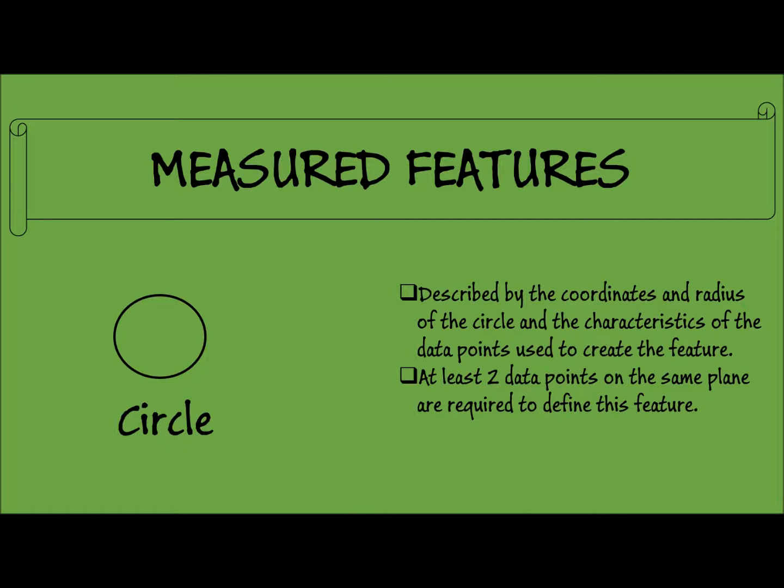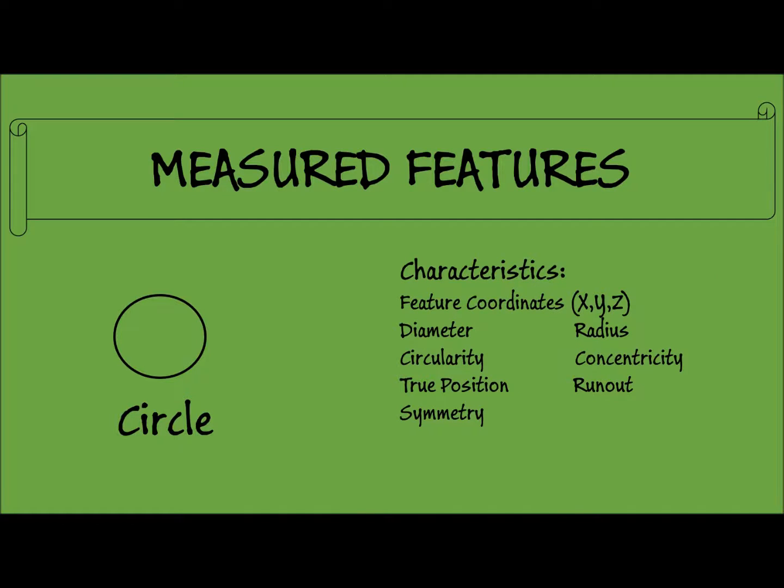At a minimum, three data points on the same plane are needed to define a circle feature. The result will show the feature coordinates, diameter, radius, circularity, concentricity, true position, run-out, and symmetry.